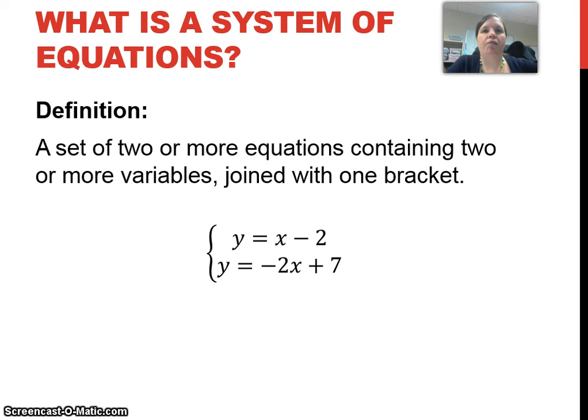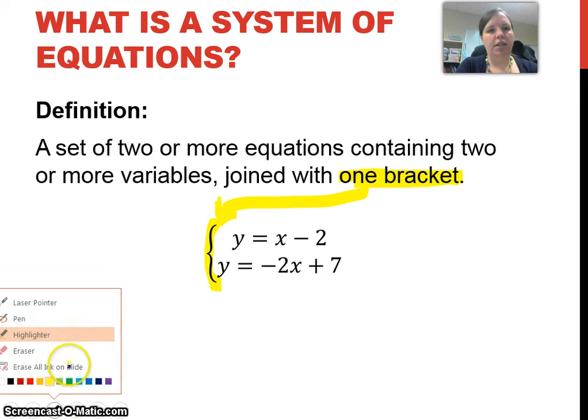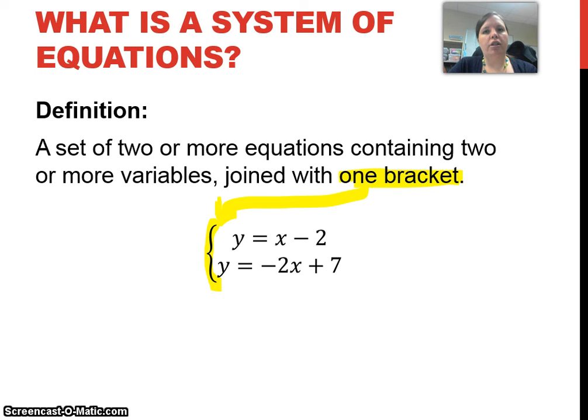First off, definition of what a system of equations actually is. A system of equations is just a set of two or more equations containing two or more variables, joined with a bracket. This bracket is just showing that they're joined together, that we're considering both equations at the same time. In this case, we have two equations in slope-intercept form, but a system of equations can be any kinds of equations together, and it doesn't just have to be two of them, but two or more.